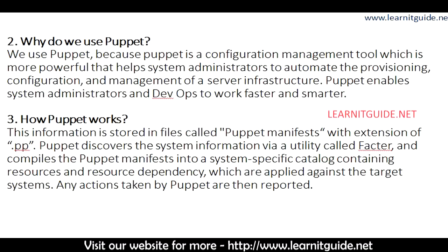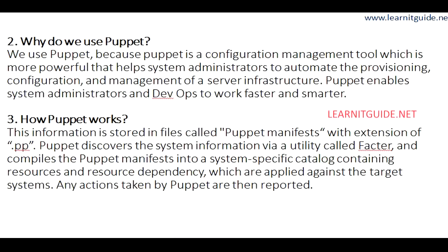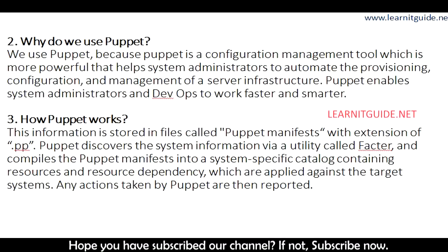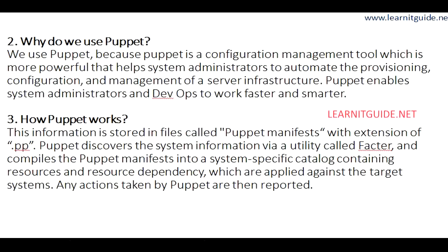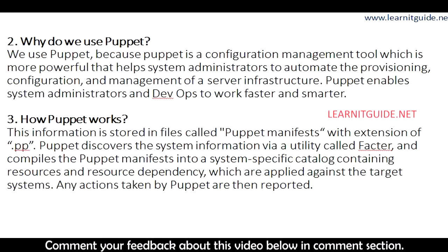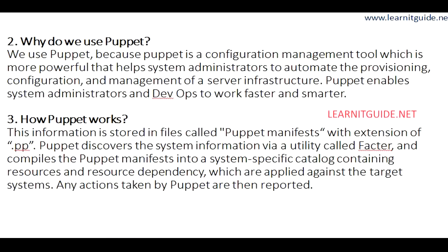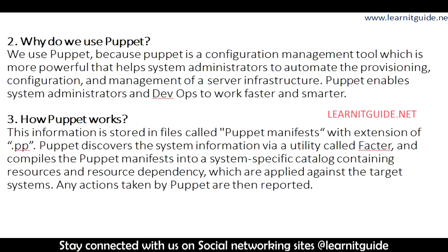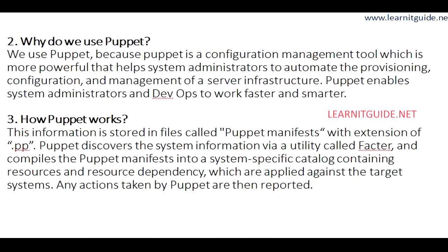There would be a Puppet manifest file with the extension .pp where you have to declare your resources and resource state to be applied at the client end. According to that, the agent will go to the Puppet master server, fetch the information, and based on the manifest file, change the resource state.